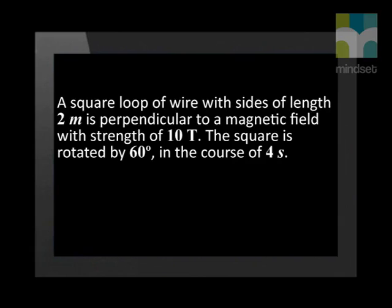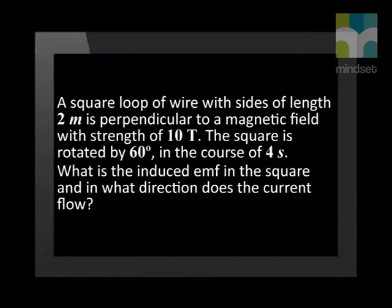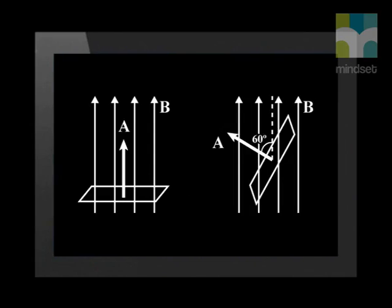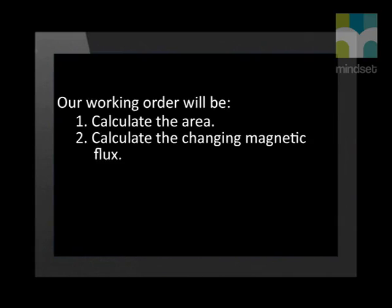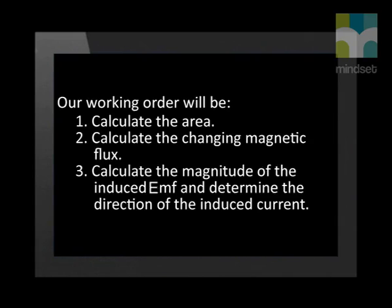There is time for one more example, and we are going to answer two questions here. A square loop of wire with side length 2 meters is perpendicular to a magnetic field with strength of 10 Tesla. The square is rotated by 60 degrees in the course of 4 seconds. What is the induced EMF in the square and in what direction does the current flow? Our working order will be: 1. Calculate the area. 2. Calculate the changing magnetic flux. 3. Calculate the magnitude of the induced EMF and determine the direction of the induced current.